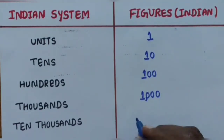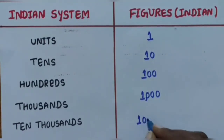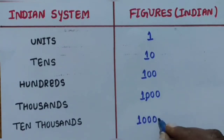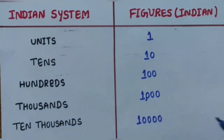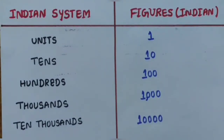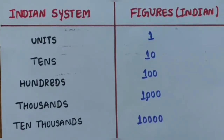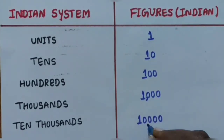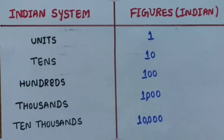Next is Ten Thousands, written as 10,000 - that is one followed by four zeros. The comma is applied at 3 digits from the right side, giving us: Units, Tens (10), Hundreds (100), Thousands (1,000), Ten Thousands (10,000).